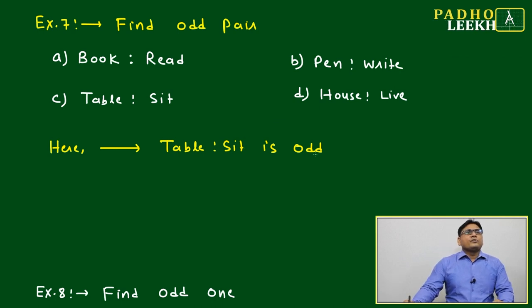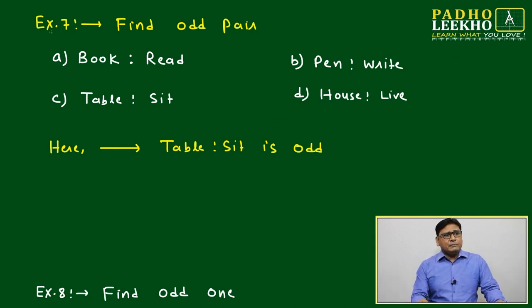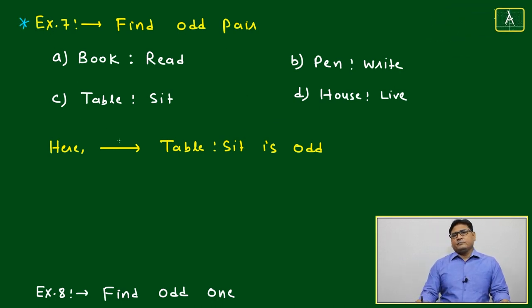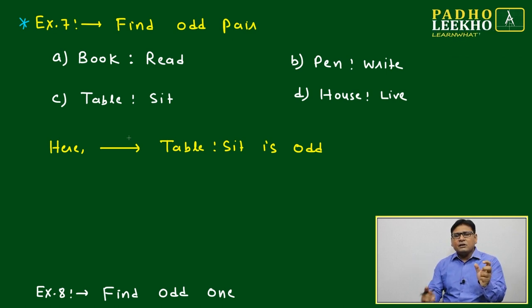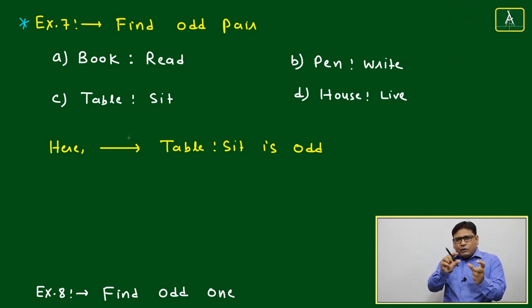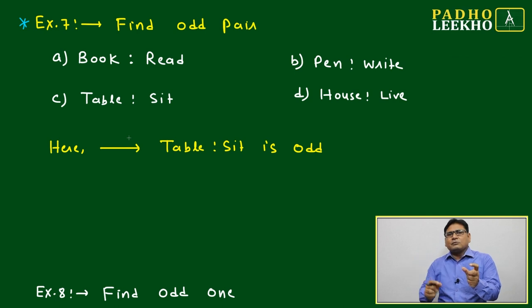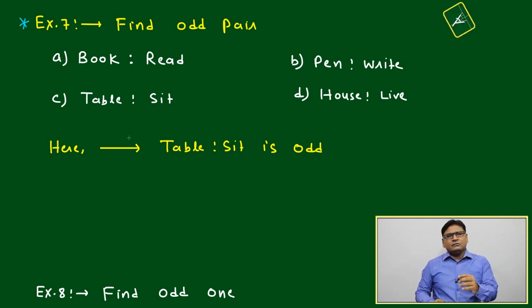One more type: find odd pair. This type can be asked where one word is given that relates to another word by a certain action or relation. Like book is given, and it relates to one word by a certain action.